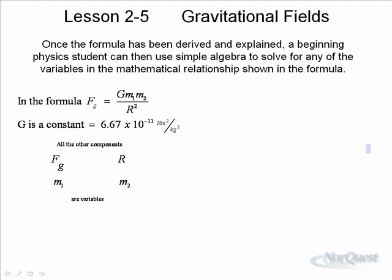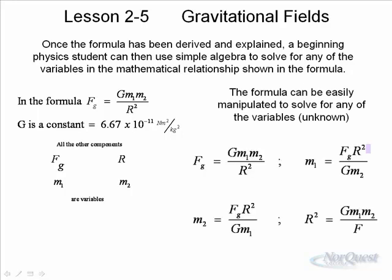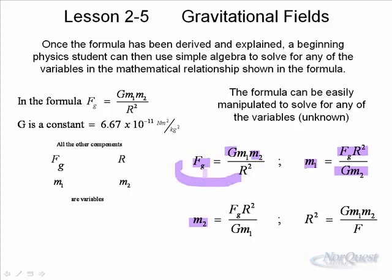Starting with Fg = G·m1·m2 / R², G is a constant so it doesn't change; all the others are variables. To solve for M1, multiply both sides by R² and divide both sides by G·M2, leaving M1 = Fg·R² / (G·M2). For M2, the same process applies but moving M1 instead. To solve for R², we rearrange to get R² = G·m1·m2 / Fg, and then take the square root to find R. If you make the masses bigger, the force of gravity gets bigger. If you increase the distance, the force of gravity gets smaller.